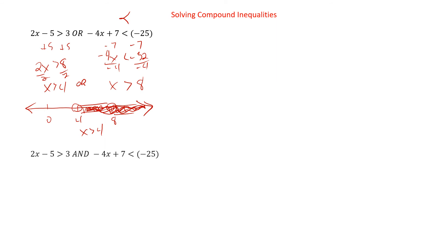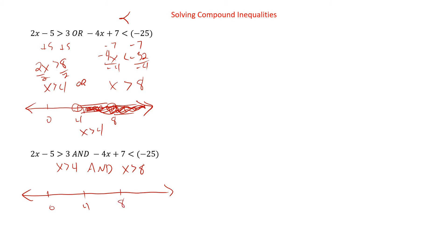Now, what if instead of an OR it was an AND? The solving would be the same — we'd have x is greater than four AND x is greater than eight. But now when we graph it, we're looking for the overlap. So we have four and eight. We need it where x is bigger than four and where x is bigger than eight. Well, the stuff between four and eight isn't bigger than eight. So in this case, we'd only be at this one — x is greater than eight. Because it has to be where they overlap, where they both happen.